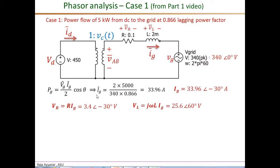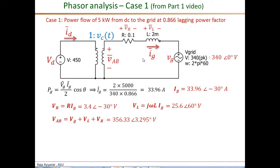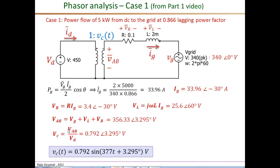We'll start with case 1, which is a power flow of 5 kilowatts from the DC side to the AC side at a lagging power factor. To recap how we calculated the control voltages using phasor analysis: we started with the ideal transformer-based average model, defined the grid voltage as the reference phasor 340∠0°, and based on the power and power factor requirement calculated the grid current. Using KVL around the secondary loop, V_AB comes out to be 356.33∠3.295°, and the control voltage as a phasor is simply V_AB over V_D.